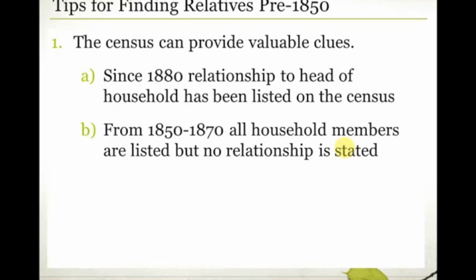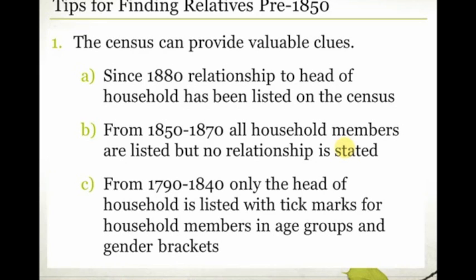Here is why we get this question about the difficulties of pre-1850 research. From 1790, when the U.S. federal census was first taken, through 1840, only the head of household is listed, with little tick marks for household members in age groups and gender brackets. So it's difficult — you have a name and a count of four, five, or twelve people in the household, but no names for any of those people.